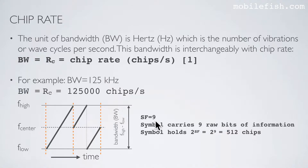if the spreading factor is 9, the symbol carries 9 raw bits of information, and the symbol holds 2 to the power of 9 equals 512 chips. If the spreading factor is 9, this symbol holds 512 chips.